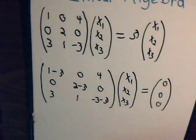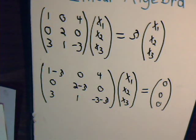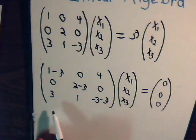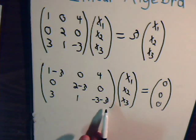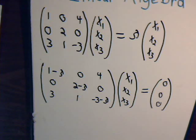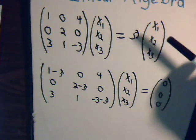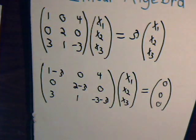That means this matrix must be a singular matrix, so its determinant must be equal to zero. This is going to give us a cubic polynomial, and we expect three values for lambda, which means this matrix probably has three different corresponding eigenvectors. It's going to take a while to grind through all of that, so be prepared to come back and join us in the next video.